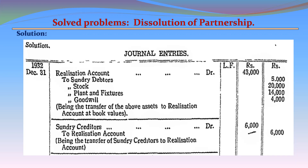Solution — Journal Entries. Entry 1: Realization Account Dr. 43,000 — To Sundry Debtors 5,000; To Stock 20,000; To Plant and Fixtures 14,000; To Goodwill 4,000. Being the transfer of the above assets to Realization Account at book values.